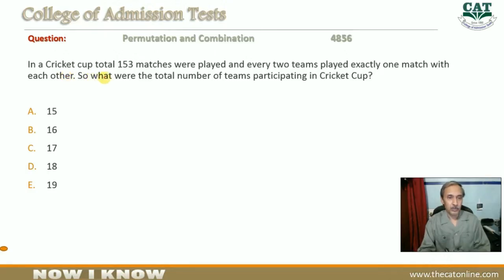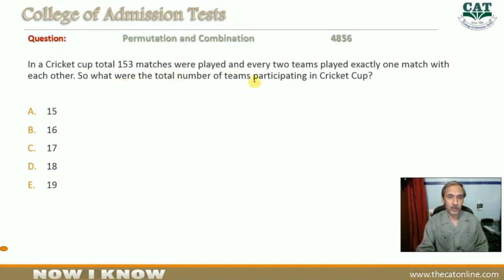In a cricket cup, a total of 153 matches were played and every two teams played exactly one match with each other. So what were the total number of teams participating in the cricket cup?